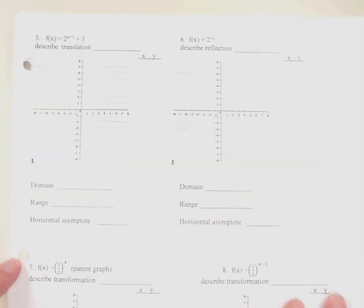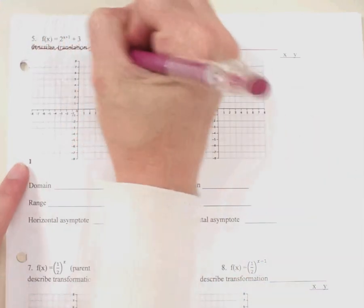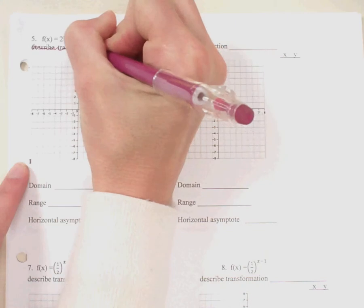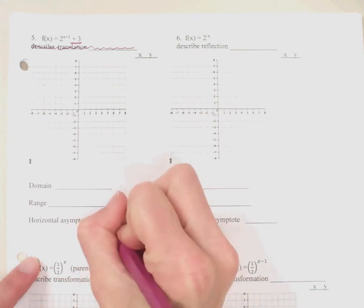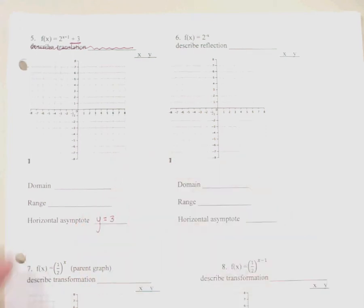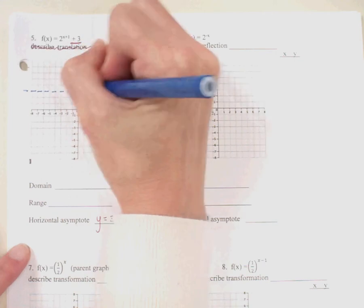In problem number 5, we have f of x equals 2 to the x plus 1 power plus 3. We do not have to describe the transformation, but we note that after the power there is a plus 3, meaning the graph has been shifted up 3 units. This changes the horizontal asymptote from y equals 0 to y equals 3, so the asymptote also shifts up 3 units.